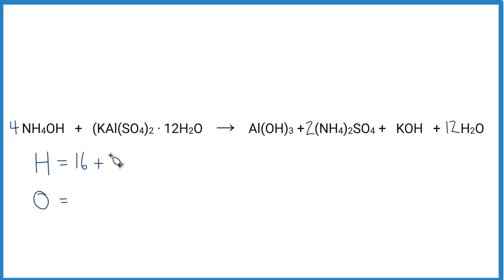Plus nothing here, two times 12, that's 24. If you add that all up, you get 44 hydrogen atoms in the reactants. Oxygen: four times one, that's four, plus the four here times two, so that's eight, plus 12 times one, that's 12, and this equals 24.